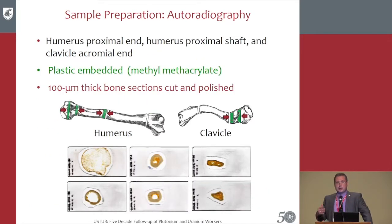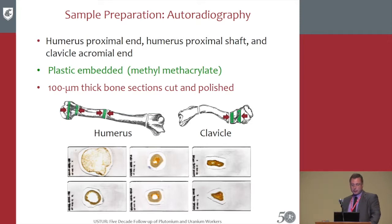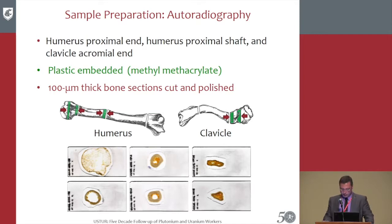Sample preparation consisted of multiple steps. Samples were chosen from two bones: humerus and clavicle. Sections were taken from the humerus proximal end, humerus proximal shaft, and clavicle acromial end. They were plastic-embedded, then cut into 100-micron thin slices, polished — you can see those slices at the bottom of the slide.